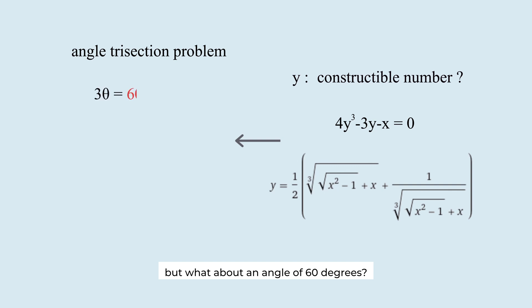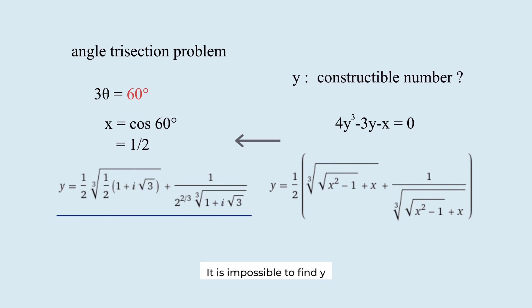But what about an angle of 60 degrees? In this case, x equals a half. And y turns out to include not only a cube root, but also an imaginary number. It is impossible to find y through construction. This means we can't trisect an angle of 60 degrees.